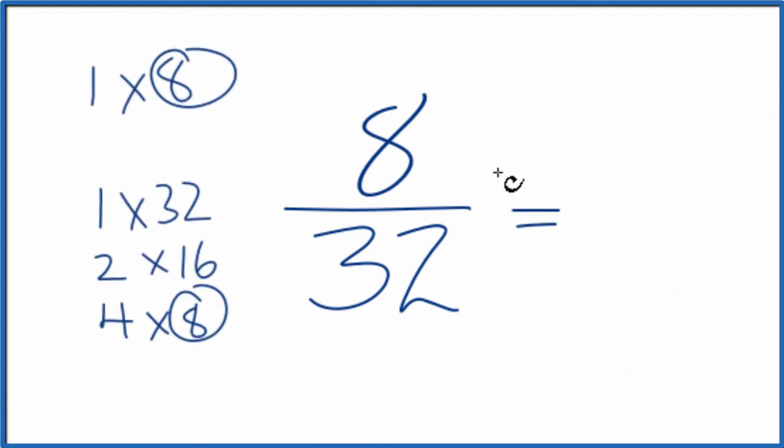We divide 8 by 8 and we get 1, and then we divide 32 by 8 and we get 4, and we've simplified 8/32 down to 1/4.